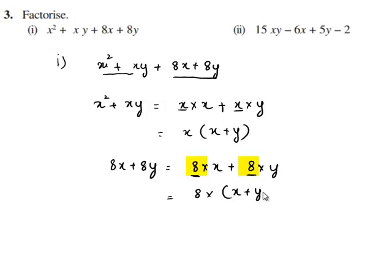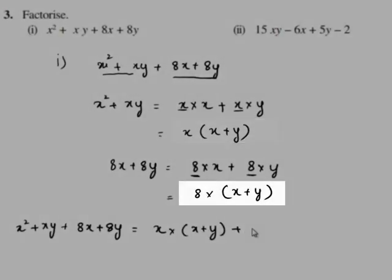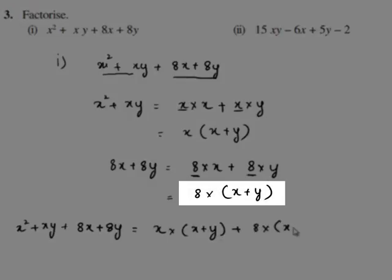We rewrite the whole expression, that is x squared plus xy plus 8x plus 8y, as x times x plus y plus 8 times x plus y.